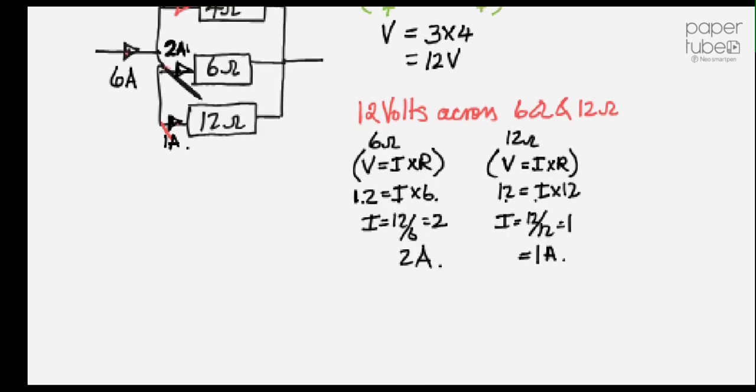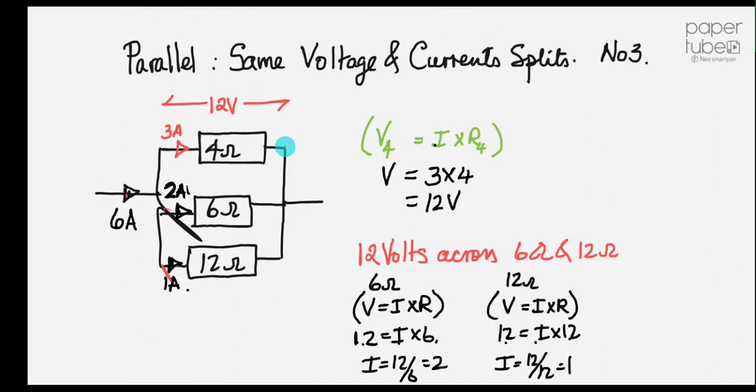Now we'll just look at Kirchhoff's laws. The current into a junction is equal to the current out of a junction. Well, it's not actually that. It's the charge into a junction. But charge and current is the same thing, they're two brothers. So it's 3 plus 2 plus 1 equals 6 amps. So follow that back up again. 3 amps comes out of that, 2 amps comes out of that, and 1 amp comes out of that. And guess what's in that? 6 amps. Happy days.